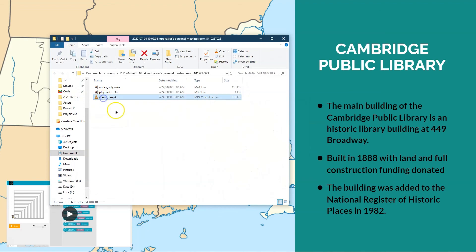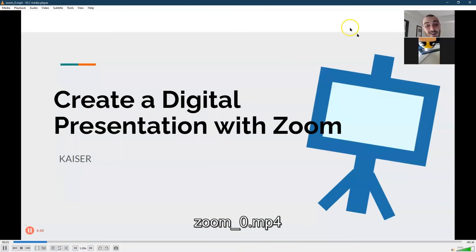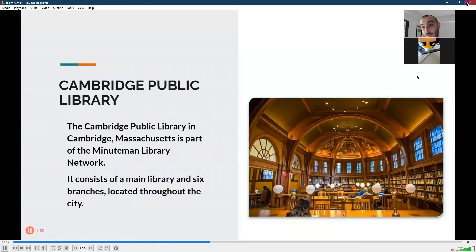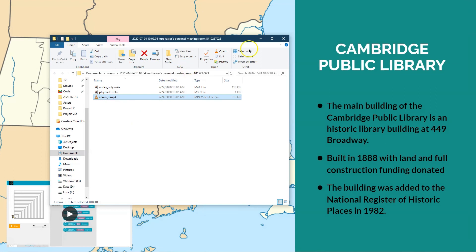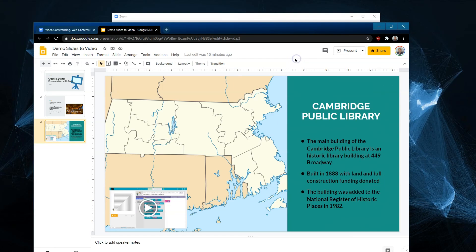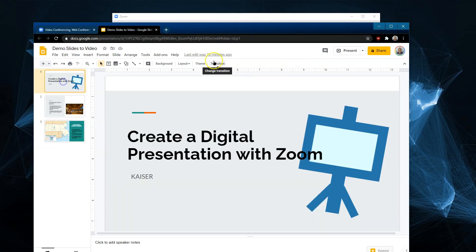Let's check it out — and there we are. Notice we're both in the corner. That is a meeting recorded for both of us. Now we can upload that file to YouTube or Google Drive. It is ready to go.